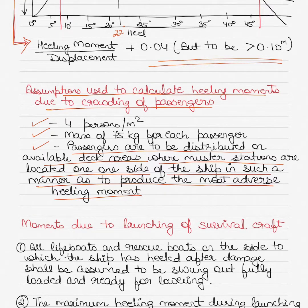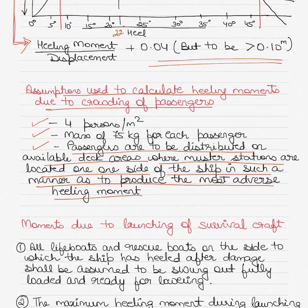Damaged stability calculations are considered for the worst conditions, not the best. The worst conditions are assumed and calculations are conducted based on that, because it takes into account the worst condition and prepares mariners for handling it. Your vessel could be in a slightly better condition than the worst case, but you still calculate for the worst condition because that prepares you to handle it.